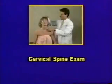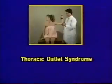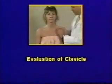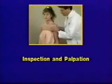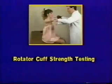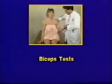The complete shoulder evaluation includes the following: cervical spine exam, neurovascular exam of the upper extremities, evaluation for thoracic outlet syndrome, evaluation of the clavicle and its joints, inspection and palpation of the shoulder girdle, range of motion testing both active and passive, rotator cuff strength testing, impingement testing, biceps test, instability testing, and test for generalized ligamentous laxity.